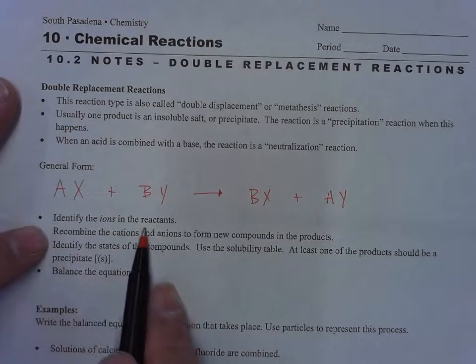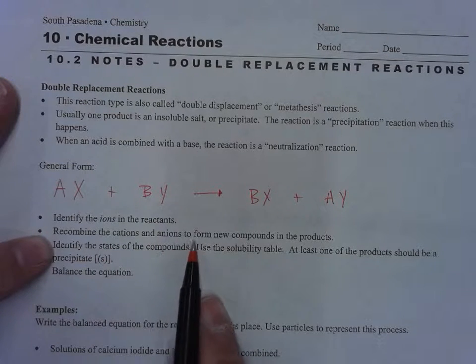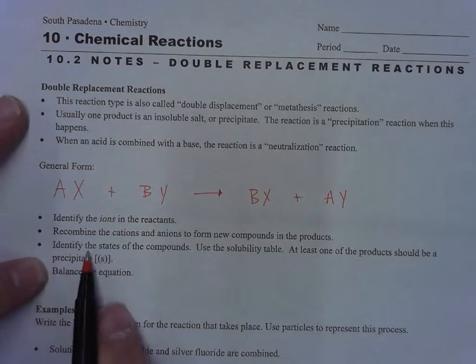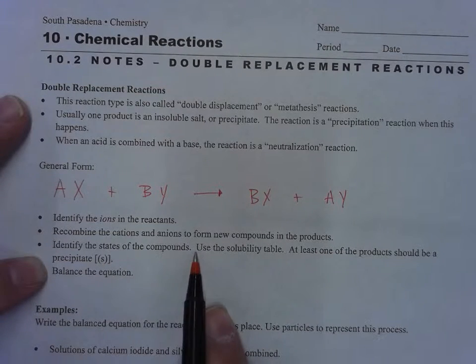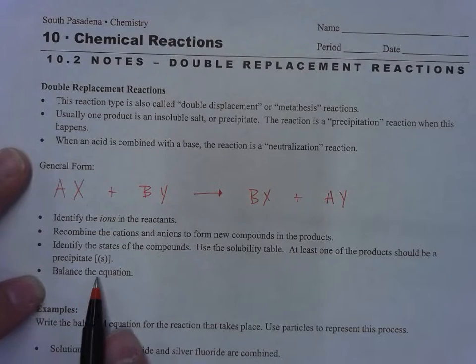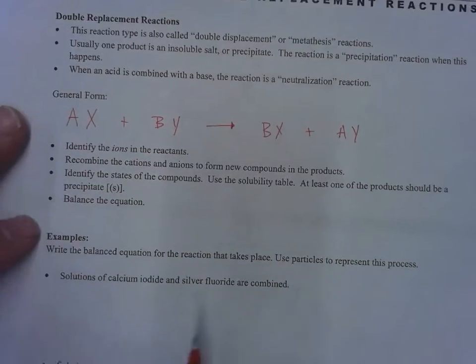The steps are: identify the ions in the reactants, recombine the cations and anions to form new compounds in the products, identify the states of the compounds using the solubility table—at least one of the products should be a precipitate, usually not always—and then balance the equation.